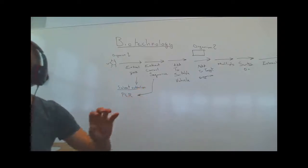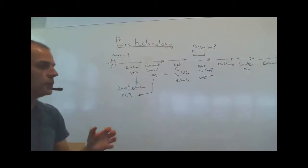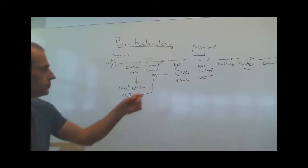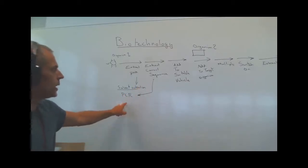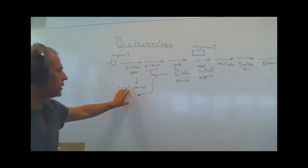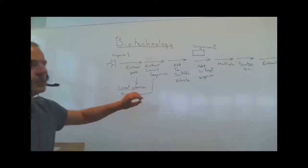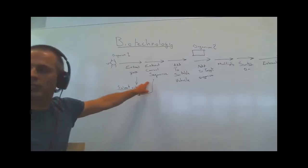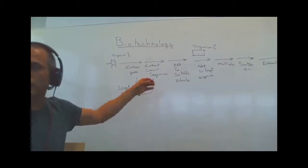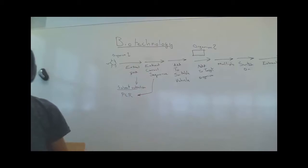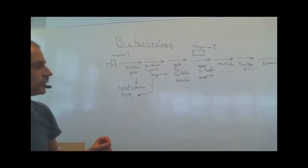PCR is the thing that people use to make lots of DNA from a crime scene. We can use it to extract whole DNA, to amplify a region that we want, or if we've got a sequence that we want to make more of. So let us look at that in more detail.